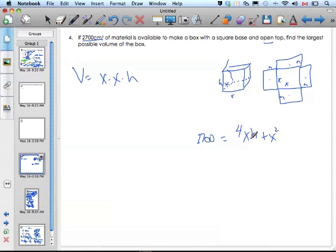And so I have an equation of two variables. I can substitute it in. If I solve for h here, I'll subtract x squared from both sides of the equation. So I have 4xh equals 2,700 minus x squared, and then divide by 4x both sides.